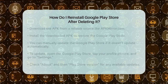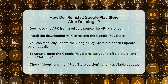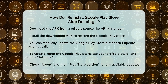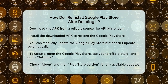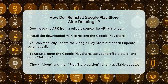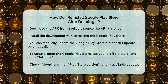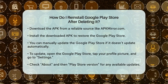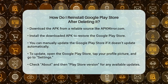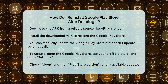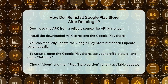It's also worth noting that you can manually update the Google Play Store if it's not updating automatically. To do this, open the Google Play Store, tap your profile picture, then go to Settings, and select About, followed by Play Store Version. If there's an update available, it will be installed automatically.